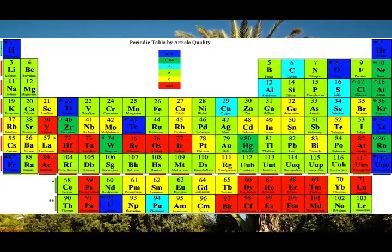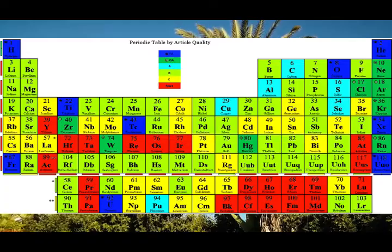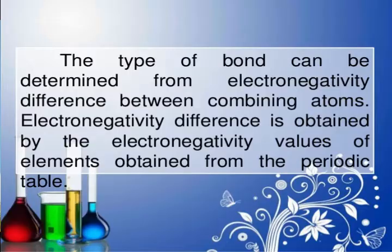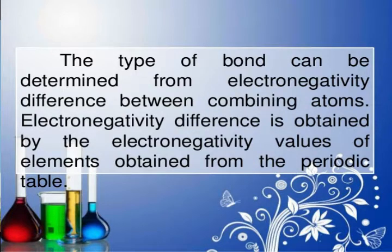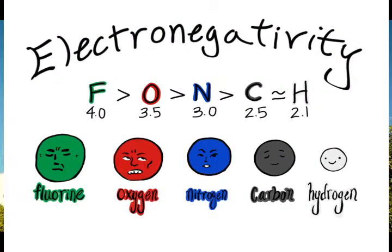In this lesson we're going to use a periodic table of elements. The types of bond can be determined from the electronegativity difference between combining atoms. Electronegativity difference is obtained from the electronegativity values of elements found in the periodic table. Electronegativity is a measure of the tendency of an atom to attract a bonding pair of electrons.